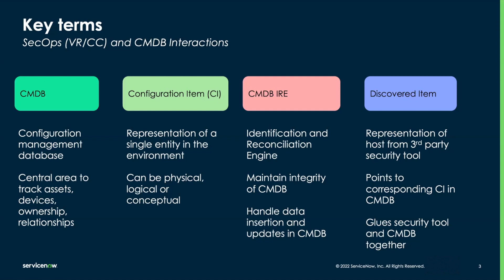CMDB IRE — IRE stands for Identification and Reconciliation Engine. This is one of the ways we maintain the integrity of the CMDB. The IRE is what is used to control data inserts and updates within the CMDB. A Discovered Item is a SecOps component. Think of the Discovered Item as a representation of a host from a third-party security tool such as a vulnerability scanner like Qualys, Rapid7, or Tenable. The Discovered Item points to a corresponding CI in the CMDB — either an existing CI found via a successful lookup, or a CI that was created because no representative CI existed. Think of the Discovered Item as the glue between our security tool and the CMDB.